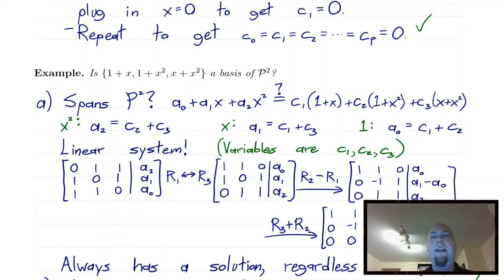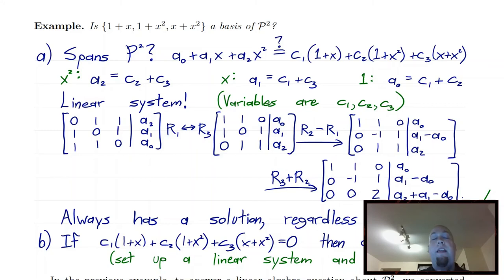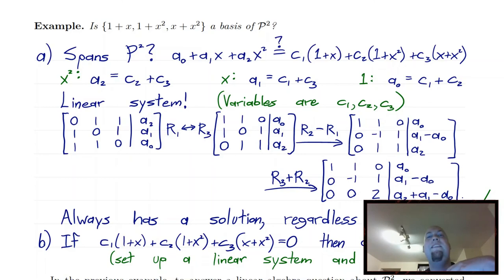It's very important to note that bases are very, very not unique. In any vector space there's a whole boatload of different bases — there are infinitely many of them, except for the zero vector space. In every non-zero vector space there are infinitely many different bases. So let's go through a less trivial example of a basis — one that's not a standard basis and is a little harder to show is a basis.